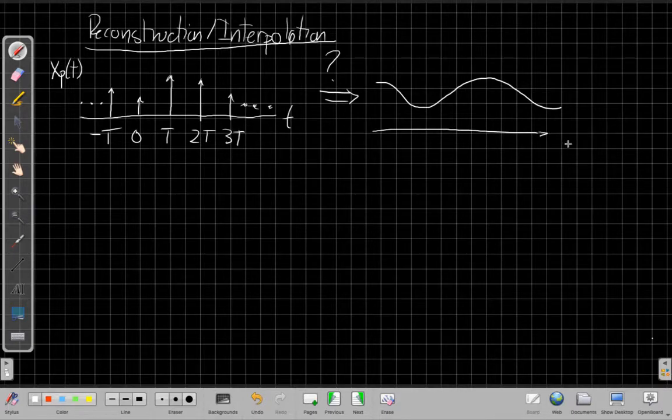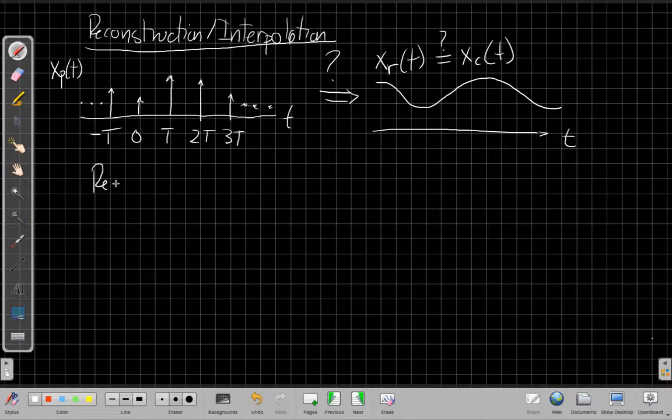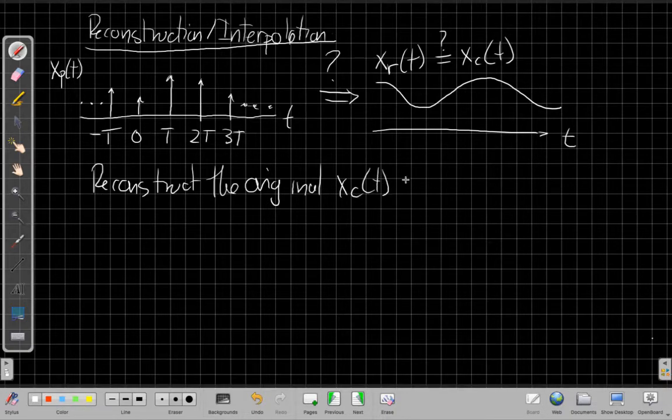And so maybe this, we would call this x sub r reconstruction of t. And so how do we make, can we do this so that it's equal to the original xc of t, assuming that we sampled without aliasing. So again, our goal is to reconstruct the original xc of t from that pulse train xp of t.